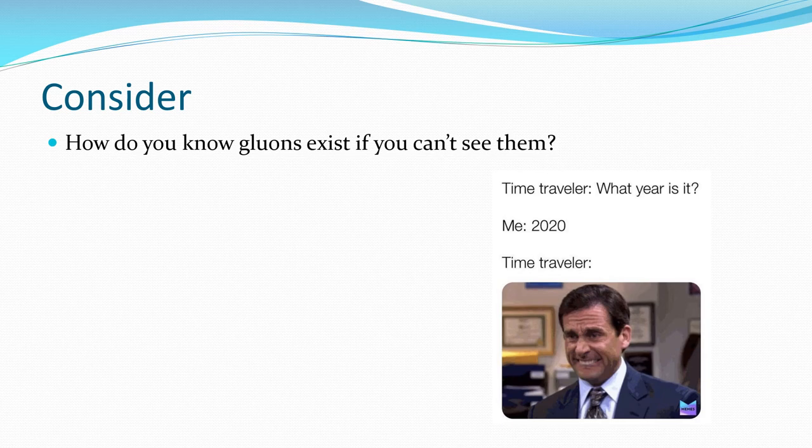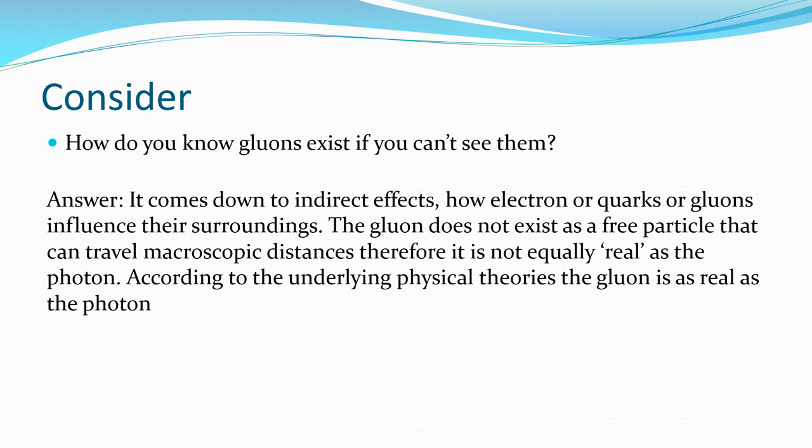How do you know if gluons exist if we can't see them? In fact, we can't see any of these particles in the Standard Model. So how do we know they exist? The short answer is, we have evidence that they exist. It comes down to indirect effects of how electrons, or quarks, or gluons influence their surroundings. The gluon doesn't necessarily exist as a free particle that can travel distances. According to the underlying physical theories, the gluon is as real as a photon.